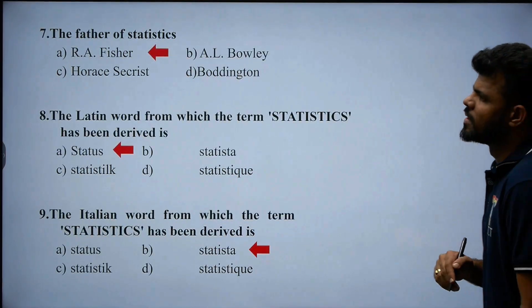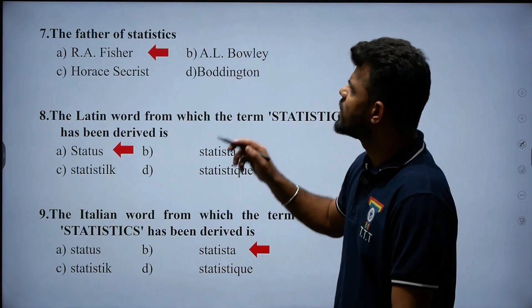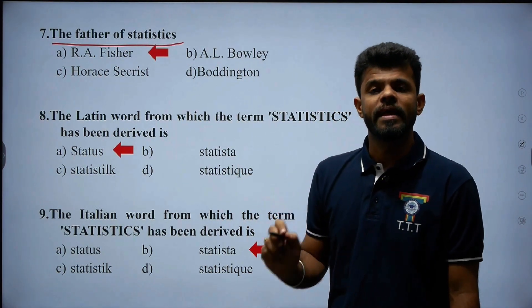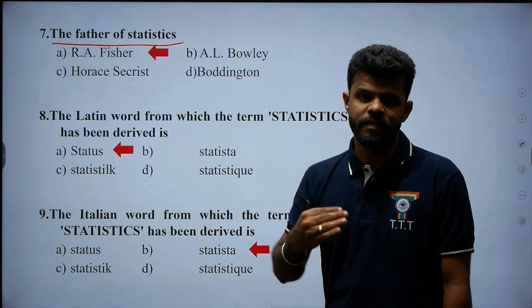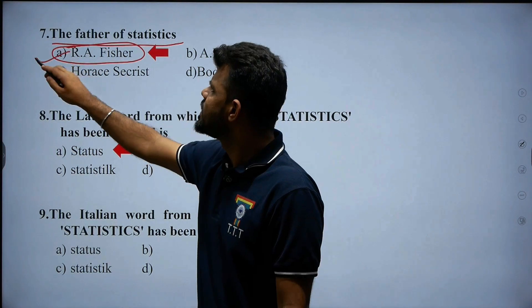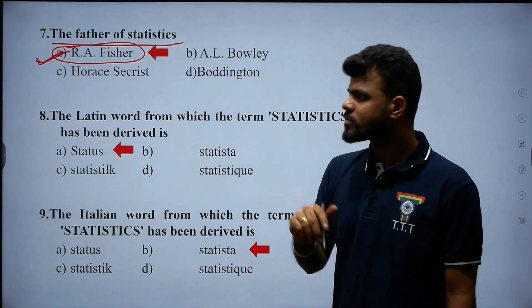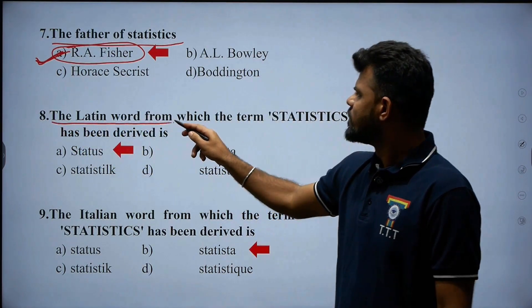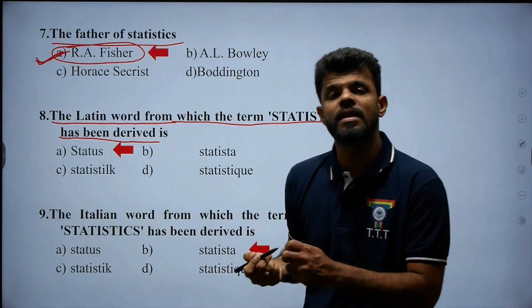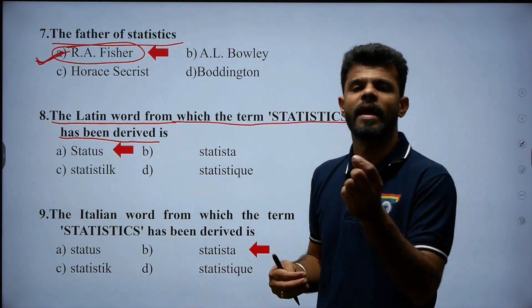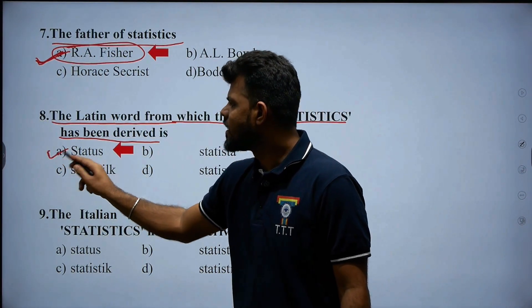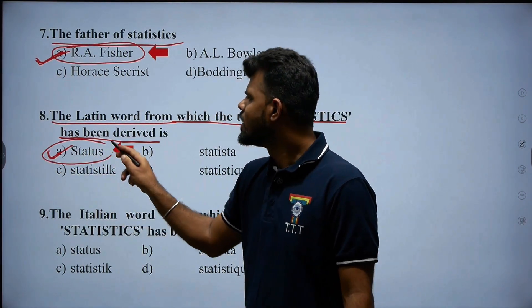Next, question number seven: who is the father of statistics? The father of statistics is Ronald A. Fisher, also written as R.A. Fisher. Therefore, option A — Ronald A. Fisher — is the right answer. Question number eight: the Latin word from which the term statistics has been derived is 'status.' Therefore, option A — status — is the right answer.